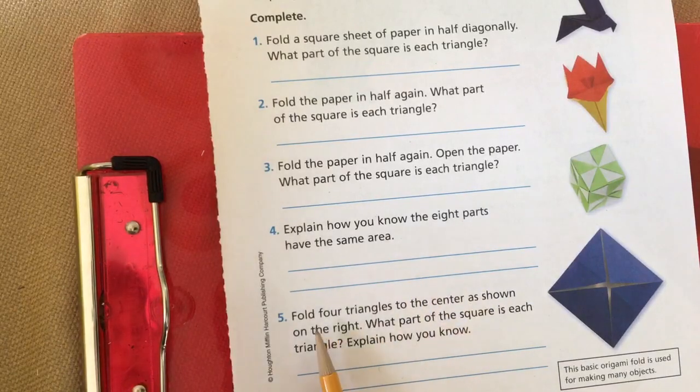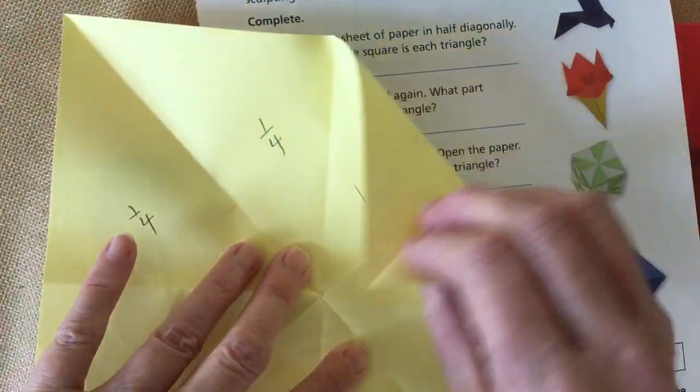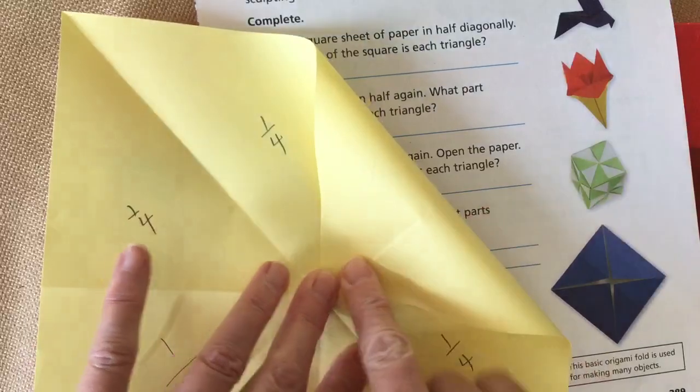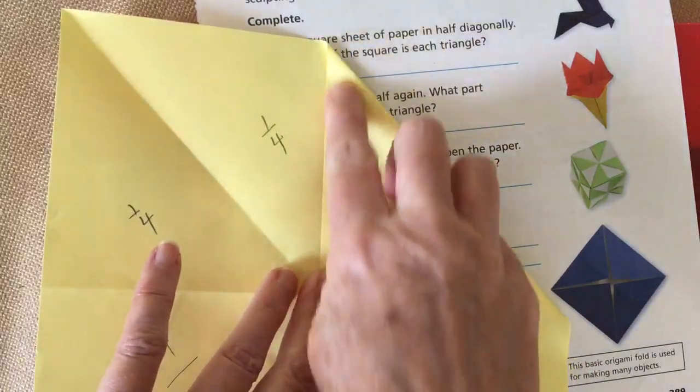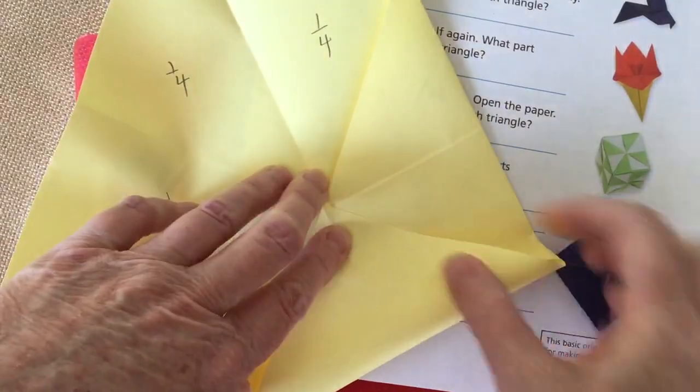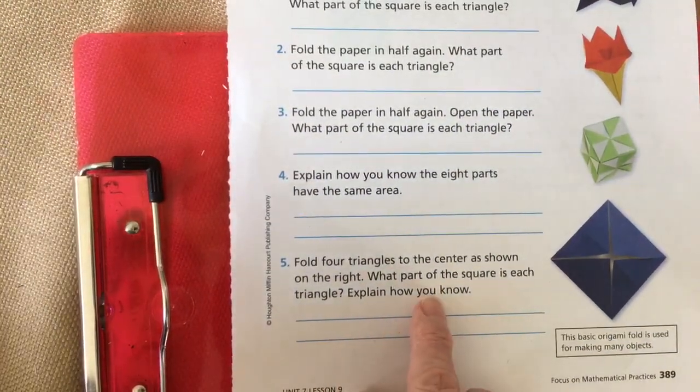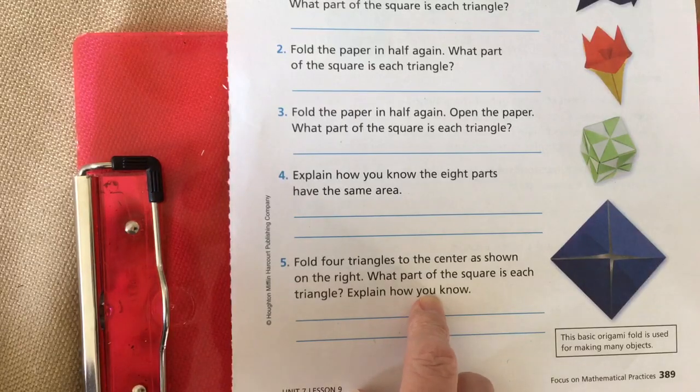For fold four triangles to the center as shown. So on this one, you will fold them to the center like this and you will crease it like there. So I'm not going to go through the whole paper with you. I want you to think about what you're doing.